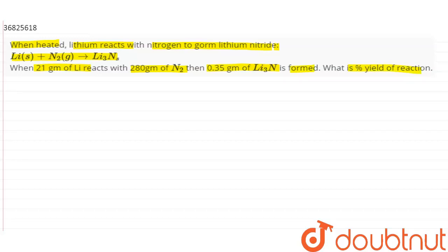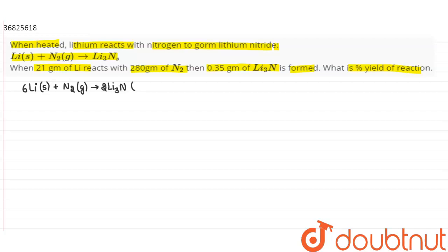We will find out the percentage yield. First, when we write this reaction and balance it: 6 Li (solid) + N₂ (gas) → 2 Li₃N (solid).